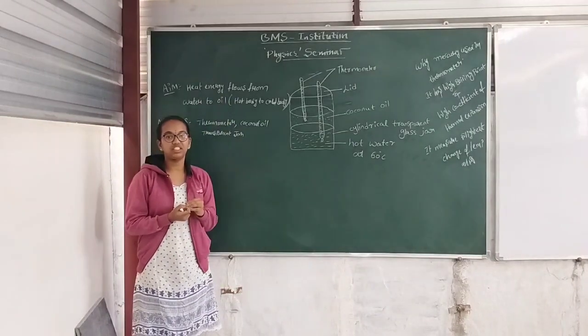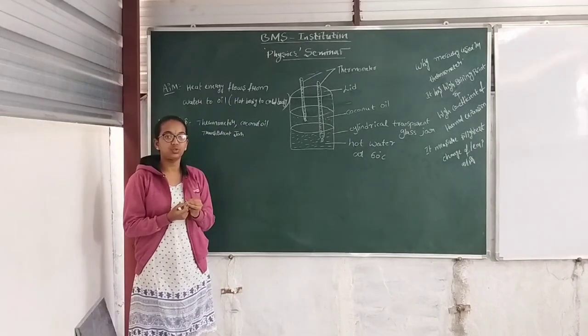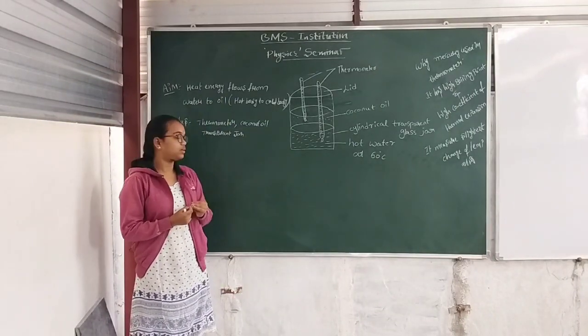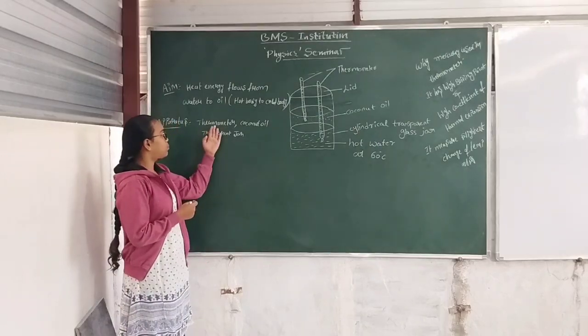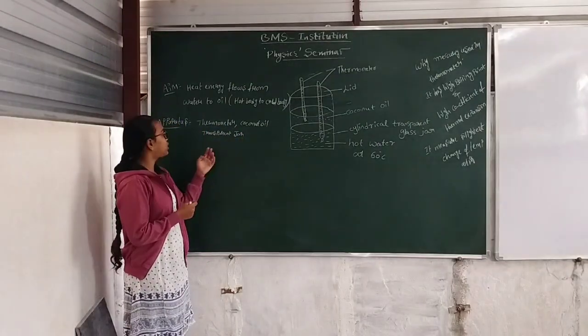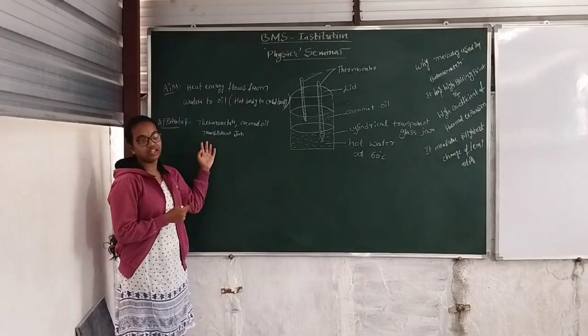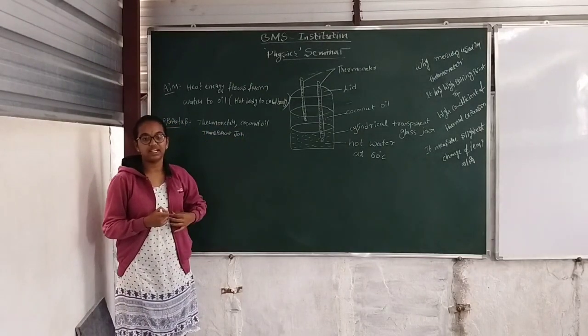The apparatus we use to do this activity are: a thermometer, coconut oil, and a cylindrical transparent glass jar.